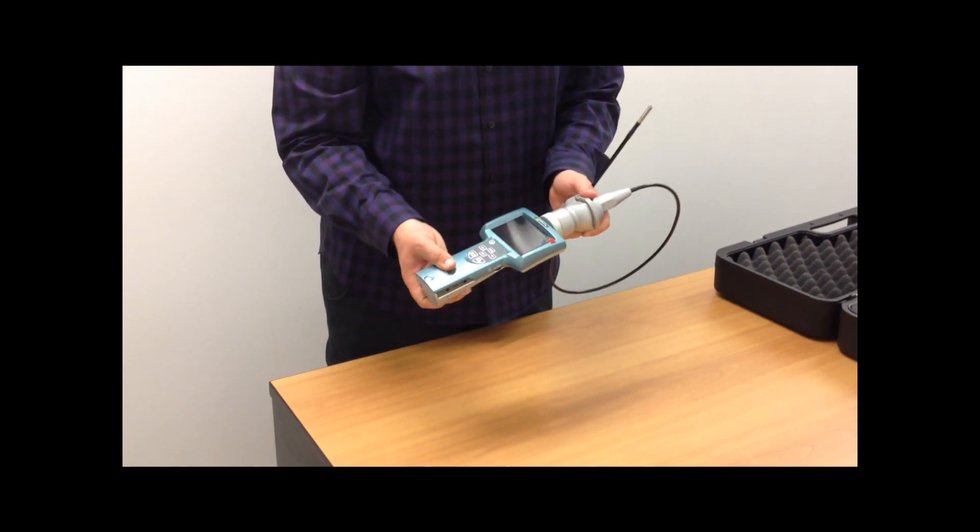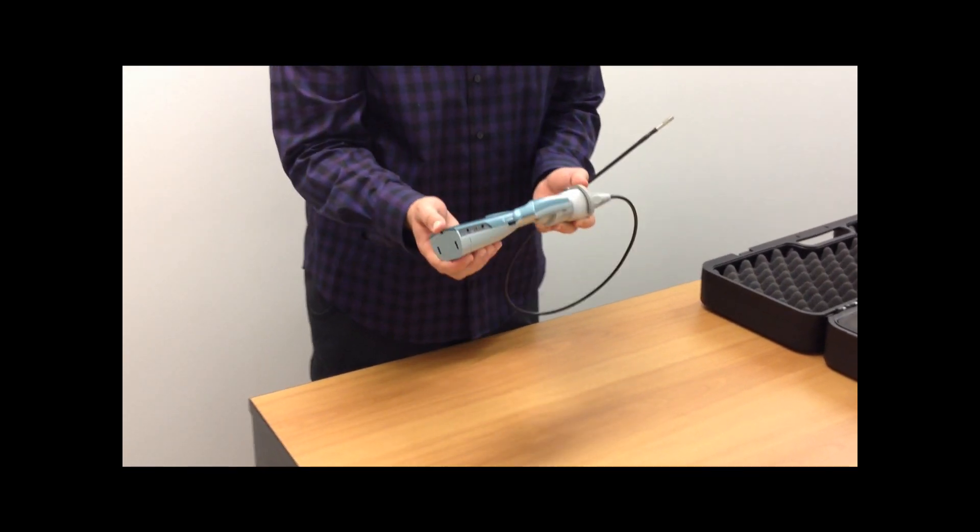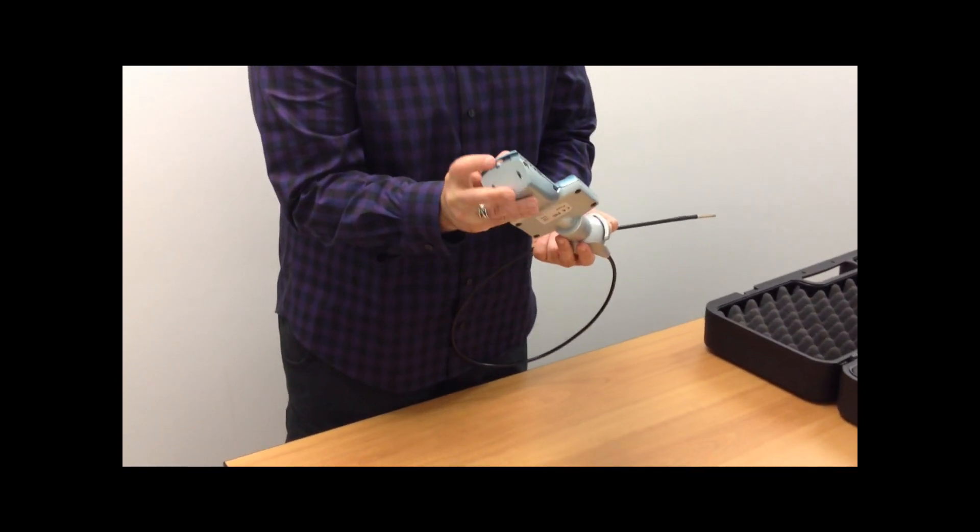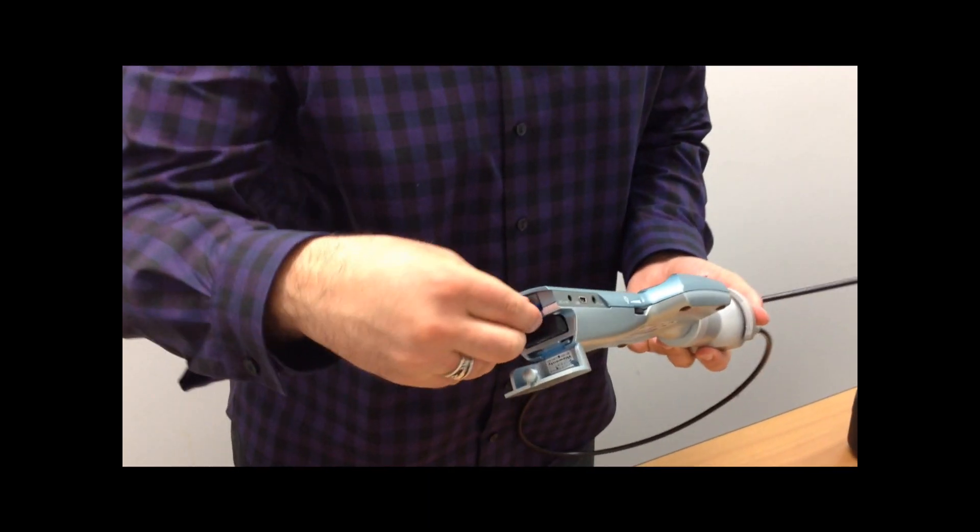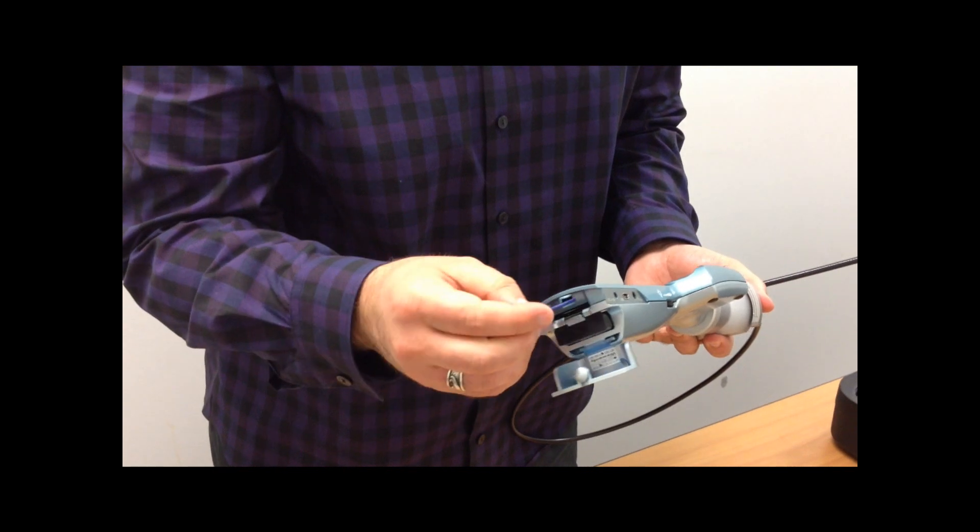As you can see, you've got a base unit monitor and then a probe. In the bottom of the monitor you'll find the rechargeable lithium ion battery, as well as a 2GB SD memory card to capture images and video.